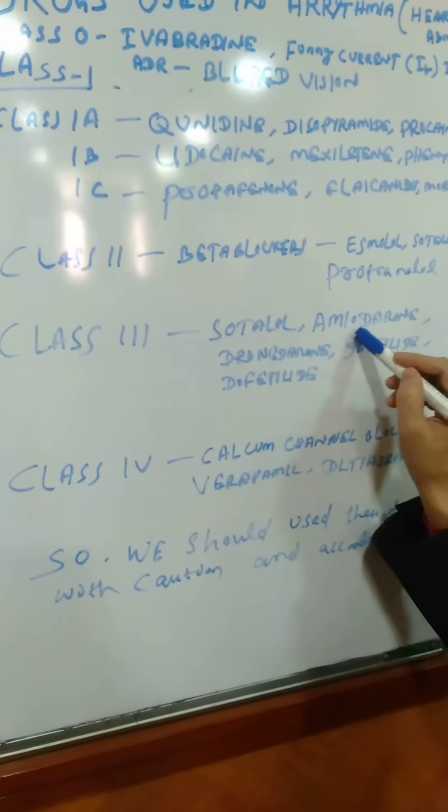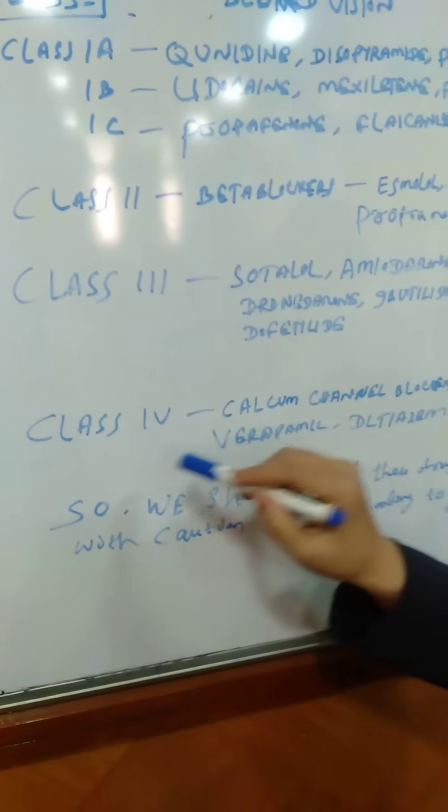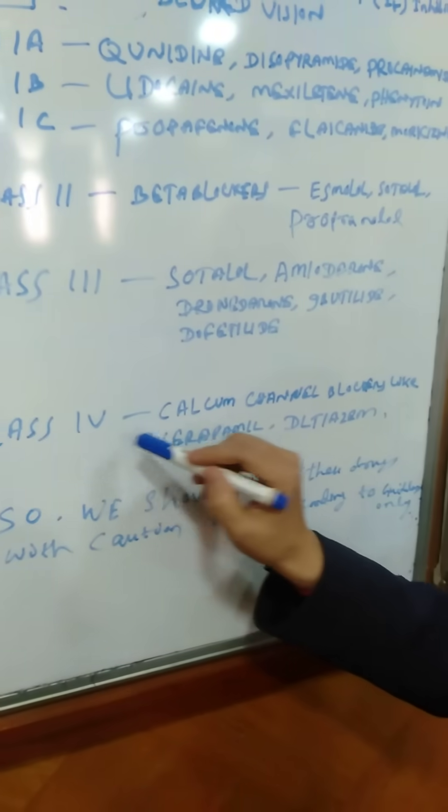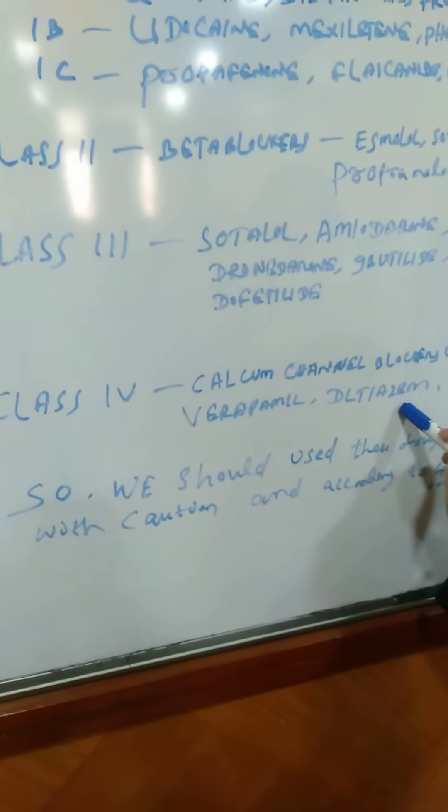Next is class 3. The drugs are sotalol, amiodarone, gronadarone, ibutilite, and dovetilite. Last is class 4, containing the calcium channel blockers like verapamil and diltiazem.